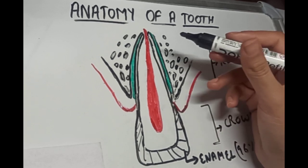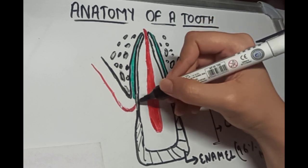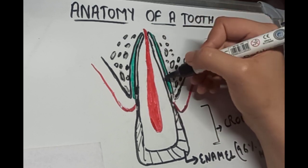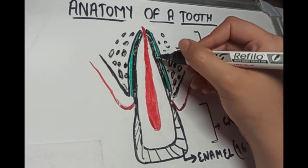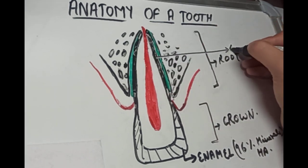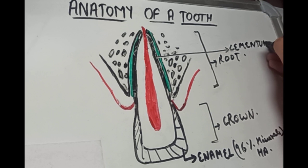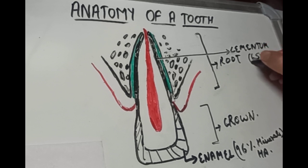Now the root portion of the tooth is covered with cementum. You can see this is our cementum portion. The cementum is also a hard tissue and it contains about 65% minerals, similar to that of the bone.